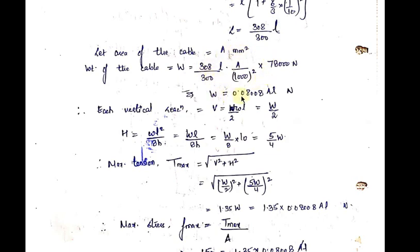Solving this gives the total weight of the cable as 0.08008AL Newtons. From the previous derivation, each vertical reaction equals WL/2. Multiplying UDL (w) by length gives the total point load, capital W, so vertical reaction V = W/2. The horizontal thrust H at the support is WL²/8h, which can be rewritten as W × L / 8h. Since L/H = 10, we get capital H = (5/4) × capital W.